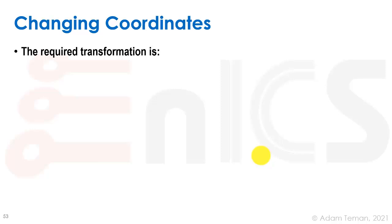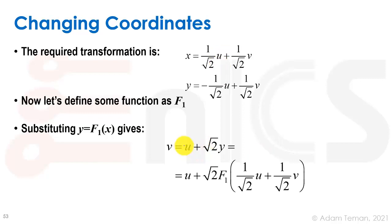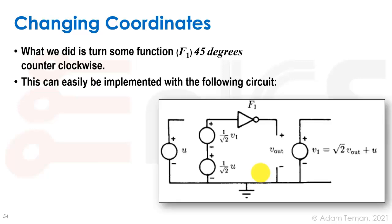Civek did the math for us. The transformation is: x = (1/√2)u + (1/√2)v, which turns our graph 45 degrees counterclockwise. We define some function f1 where y = f1(x). Separating u and v, we get v = u + √2·y, and substituting the definition of x we arrive at v = u + √2·f1((1/√2)u + (1/√2)v). We've turned function f1 by 45 degrees counterclockwise.